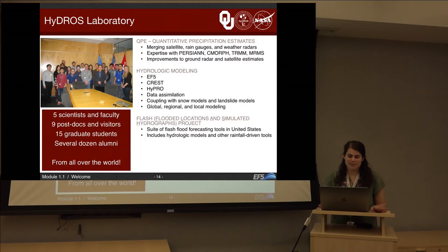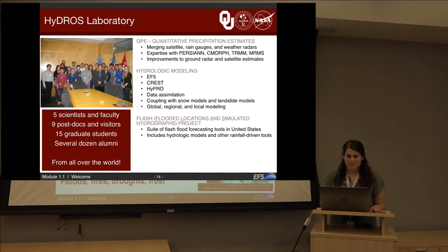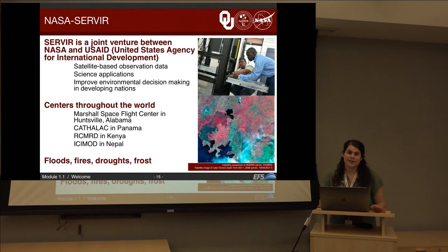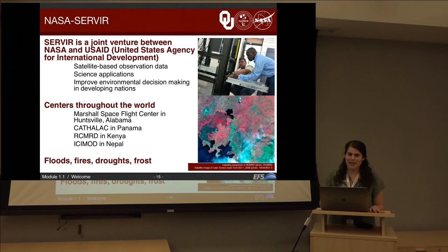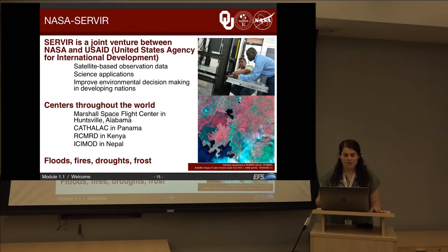Our research focuses are on quantitative precipitation estimates, hydrologic modeling — where EF5 came about — as well as the Flooded Locations and Simulated Hydrographs Project, a suite of flash flood forecasting tools used operationally in the United States. EF5 is also included in NASA SEVERE, a joint venture between NASA and the United States Agency for International Development. The goal of this program is to improve environmental decision-making in developing nations by using satellite-based observation data, so that developing nations can better forecast and make better decisions about severe weather. There are several centers throughout the world focusing on floods, fires, droughts, frost, and many other subjects.